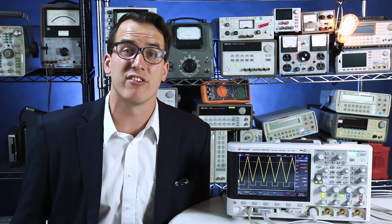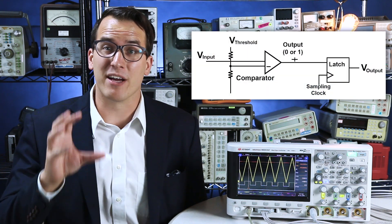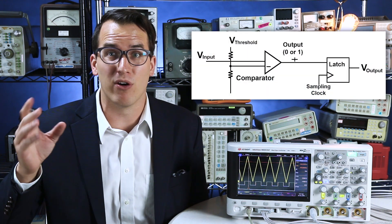The digital channels on your MSO act as a logic analyzer, and a logic analyzer channel has one bit. It's either a zero or a one, and the system essentially works like this: There's a comparator which has an output of either zero or one,